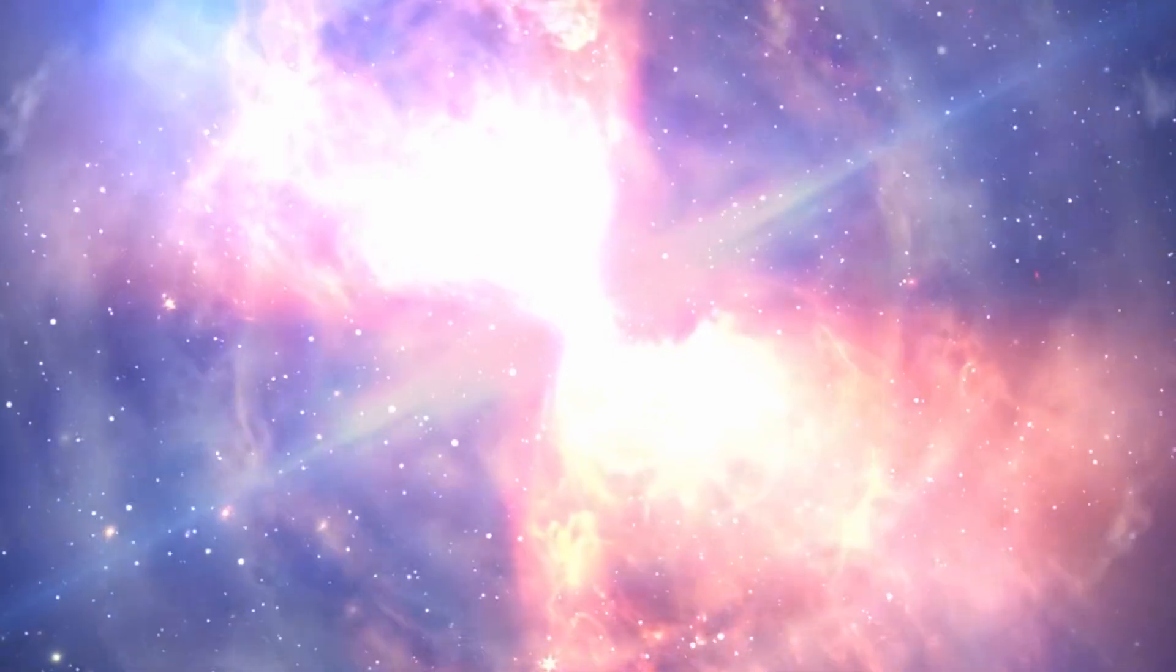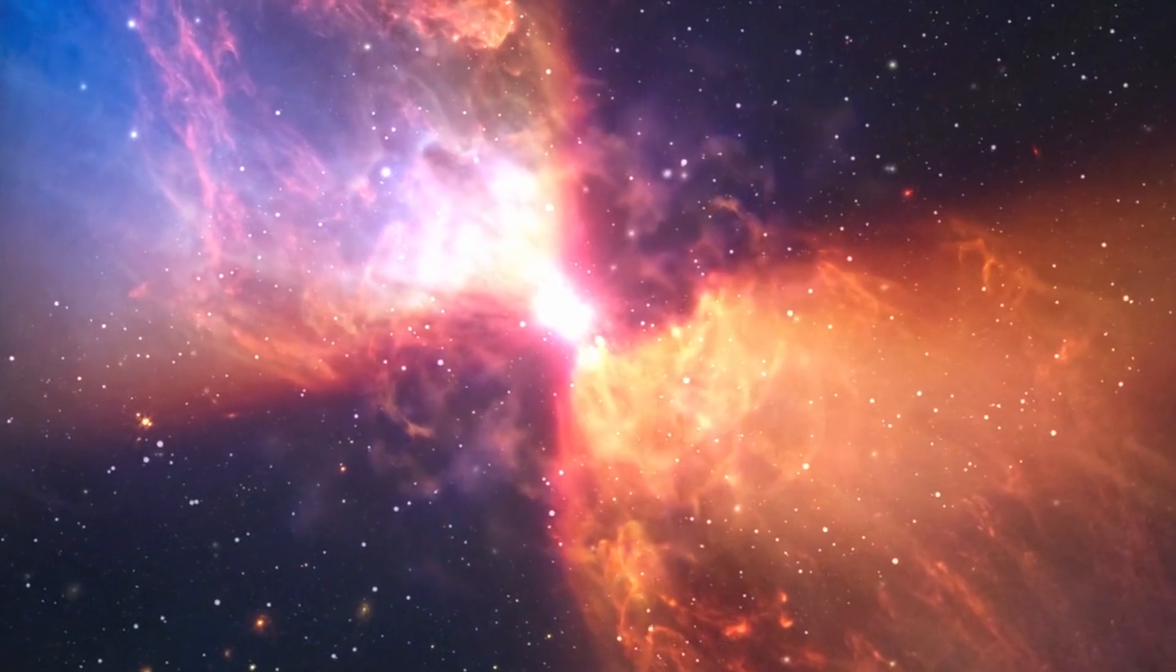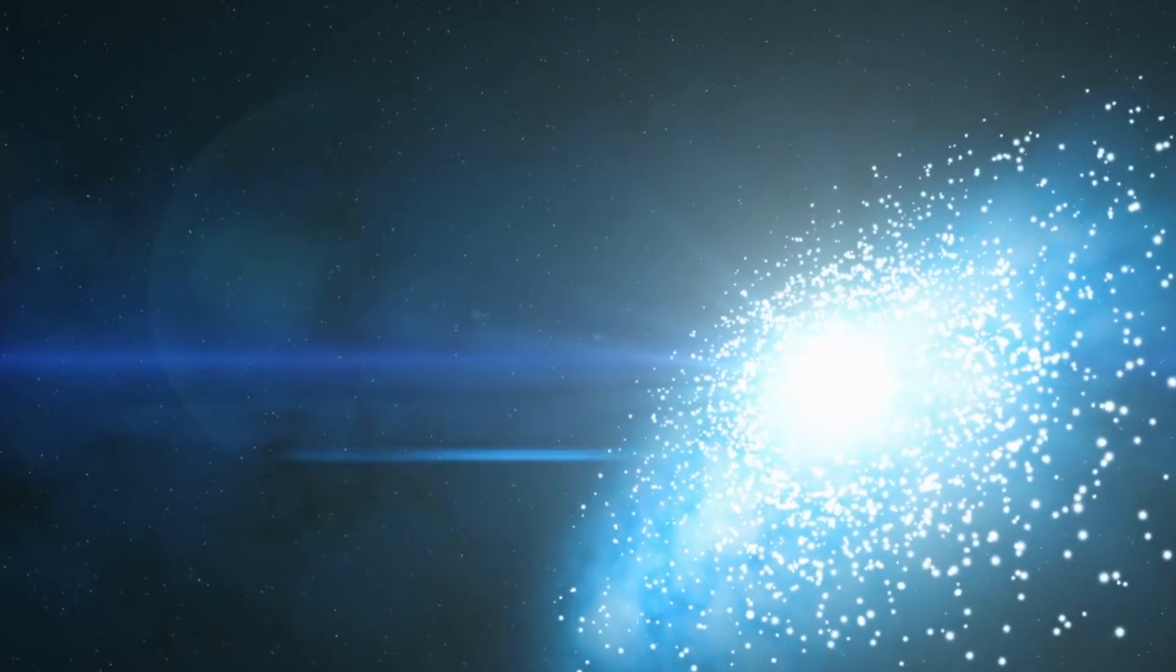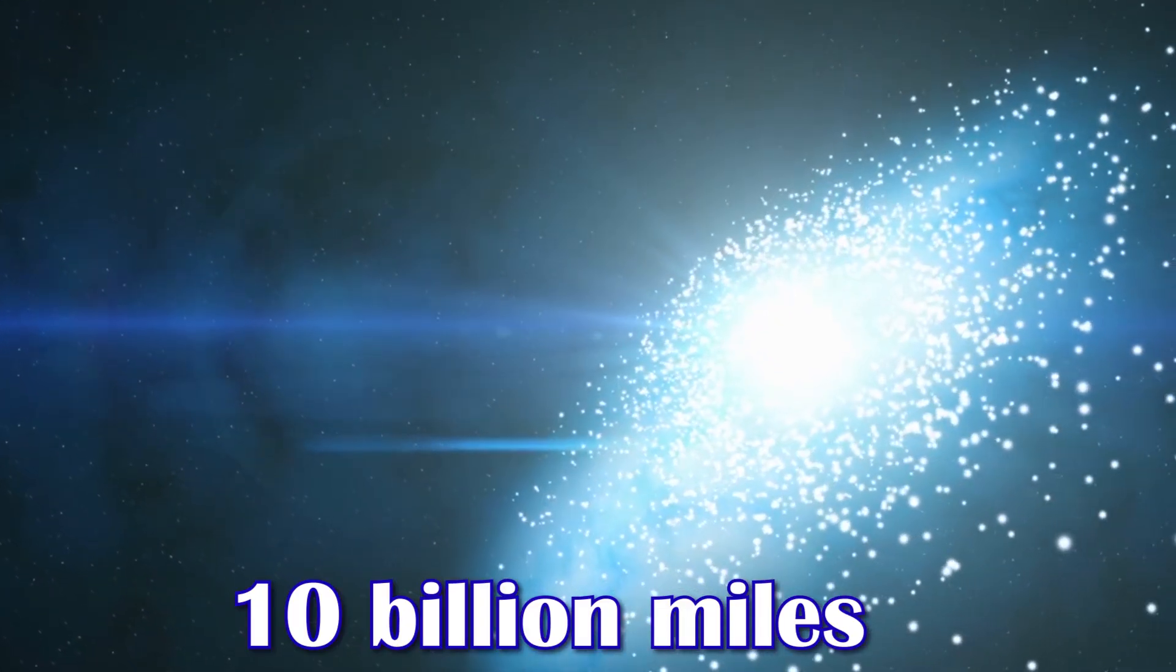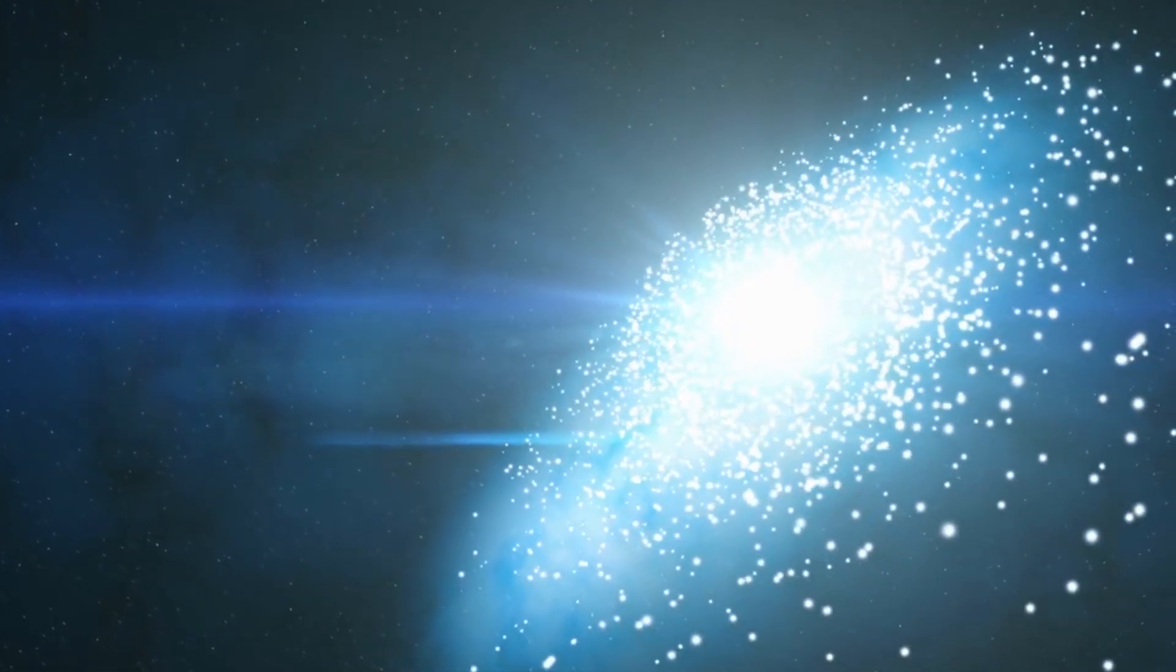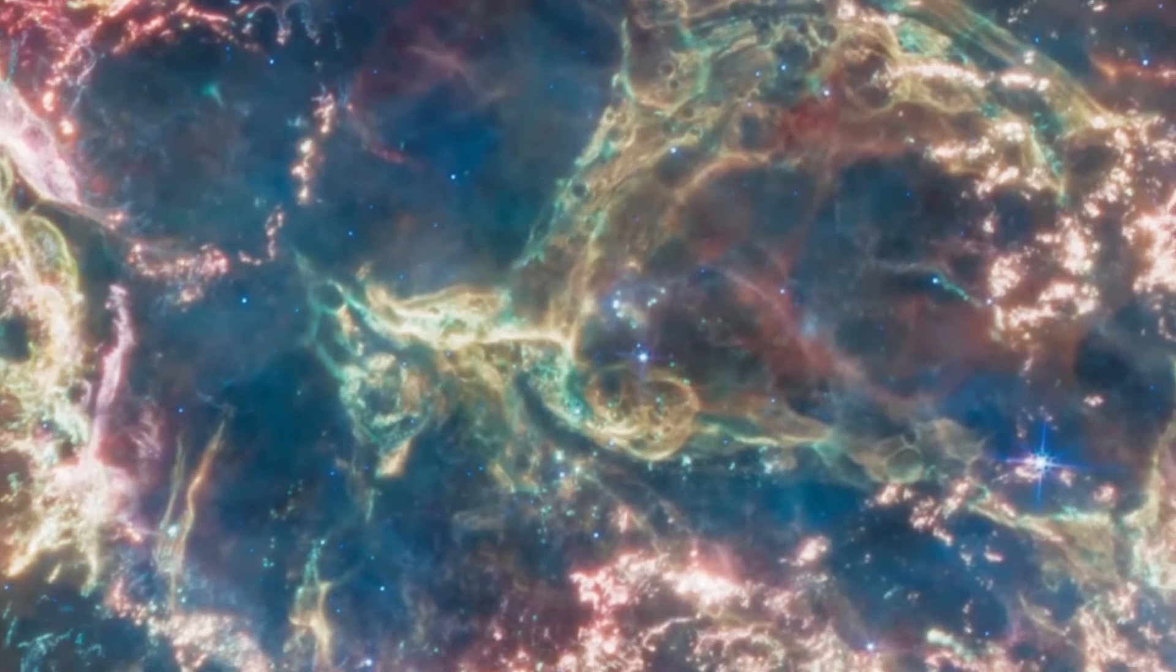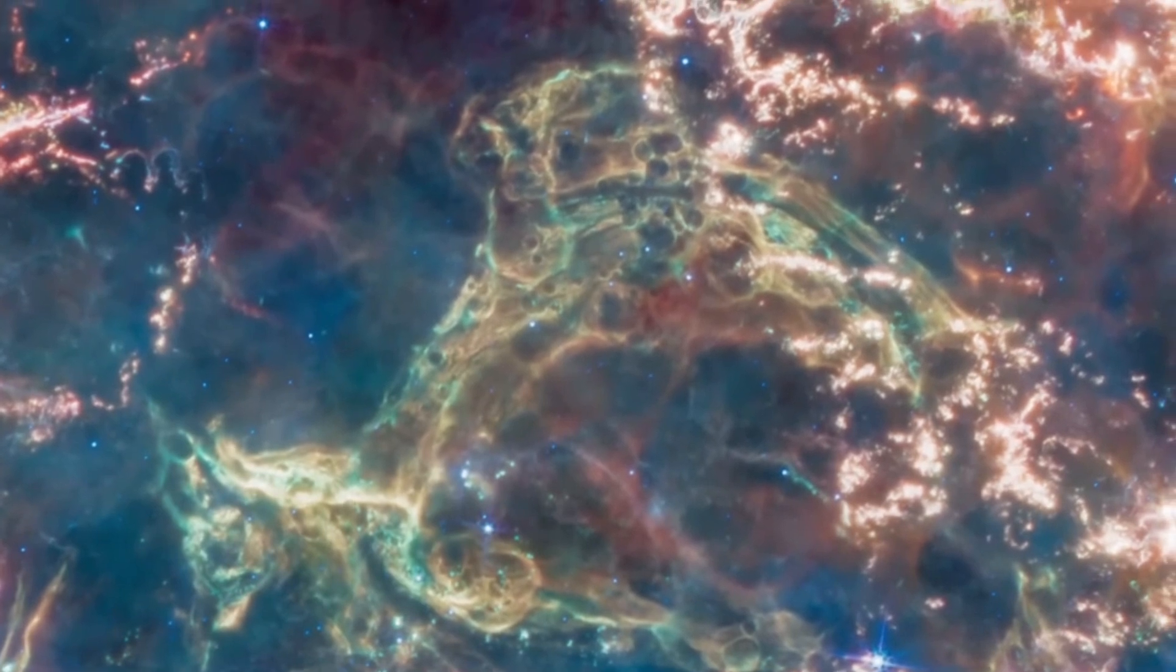We can also see wispy knots of gas and dust that look like tiny shards of glass. These filaments are the result of the star shattering when it explodes. Some debris filaments are so tiny that even the Webb Telescope cannot resolve them. This means that they are comparable to or smaller than 10 billion miles in size, roughly equal to 100 astronomical units. To put things into perspective, Cass A has a size of 10 light-years, which is equivalent to 60 trillion miles across.